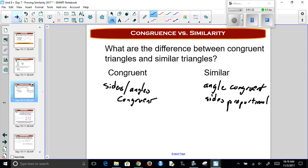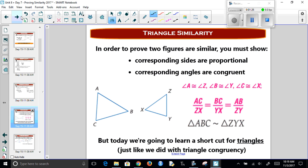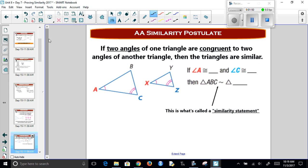So let's see what we can use to prove similarity. We have to show that the sides are proportional and the angles are congruent. Now, we don't want to prove every single one of these every single time we have two triangles. We want to look for shortcuts. Our first shortcut is if we have two angles in one triangle are congruent to two angles in another, then the triangles are similar.